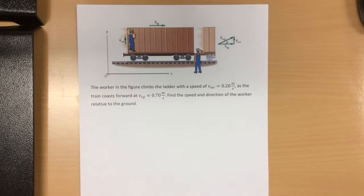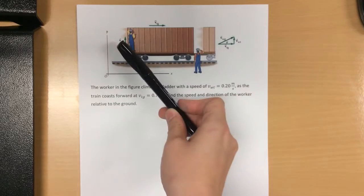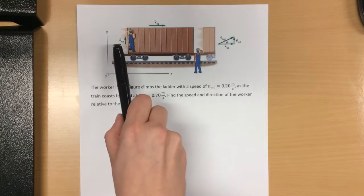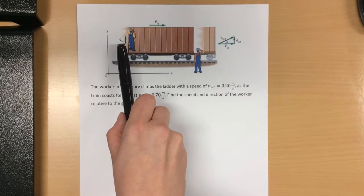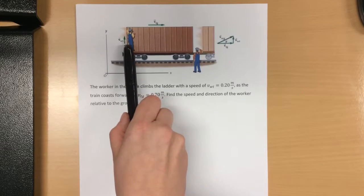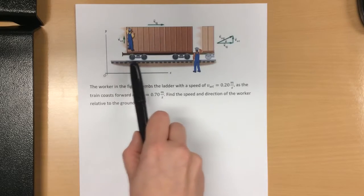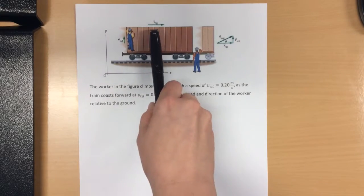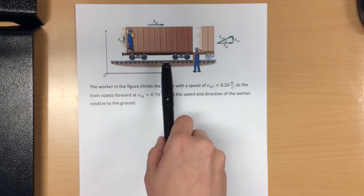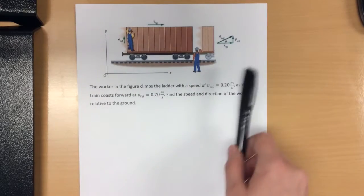Notice what we're looking at: relative. That tells you what reference frame you are looking at. When you look at these subscripts, we see velocity of WT, that's worker to the train. From the reference of the train, we see the worker just moving straight up. The next thing is the velocity of the train to the ground. Standing on the ground, we see the train moving across.